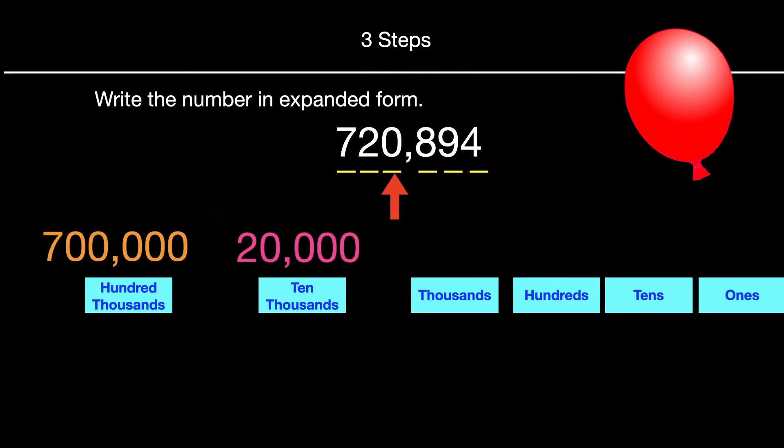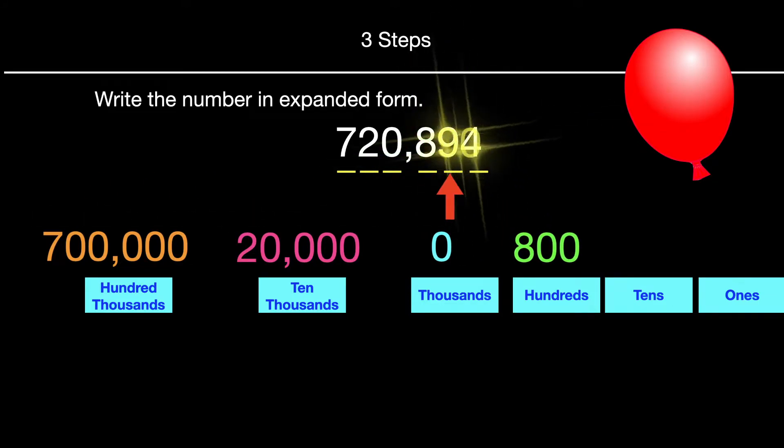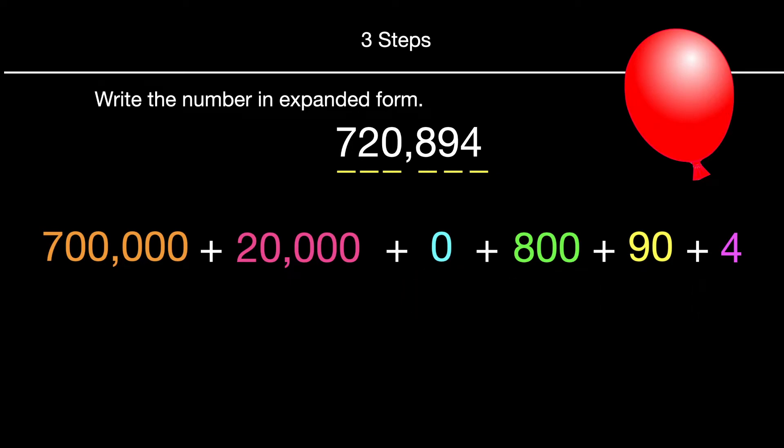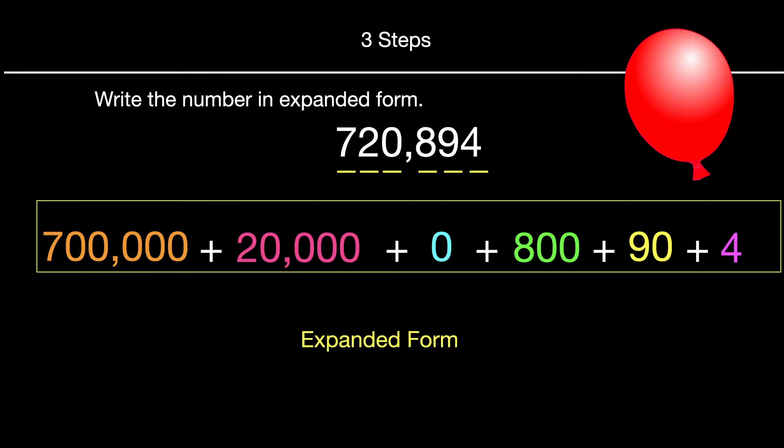So our seven would have a value of 700,000. The two would be 20,000. Just zero thousands for this one. Eight hundreds, nine tens or 90, and then our four ones. And our last step is just to simply add our addition symbols. We'll take away our place value there. And expanded form for this number is 700,000 plus 20,000 plus zero plus 800 plus 90 plus four. That's expanded form.